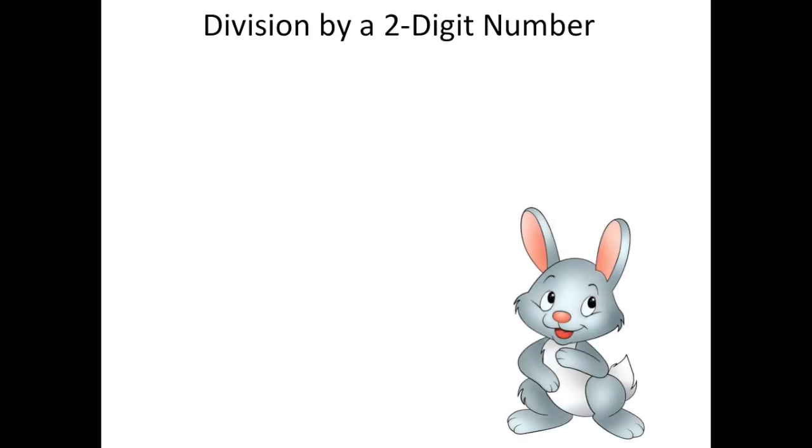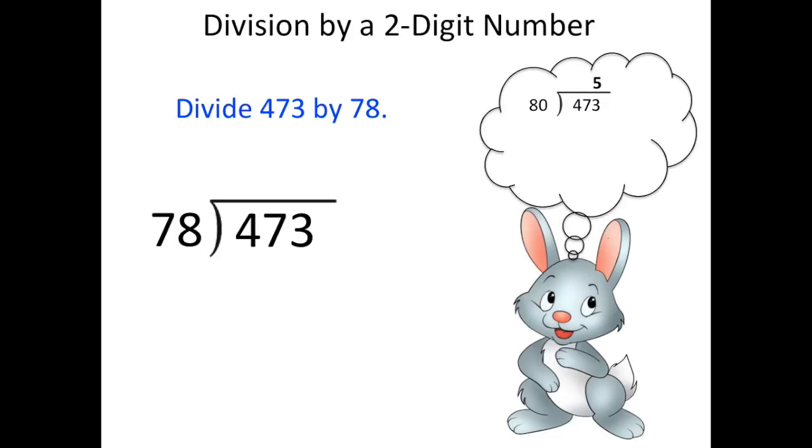The last problem Mr. Bunny was given was divide 473 by 78. Again, he sets it up as long division, and this time the divisor is 78, which he's going to round to 80. So he's going to ask himself, how many times can 80 go into 473?